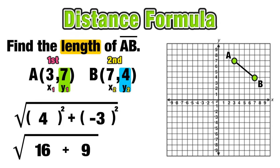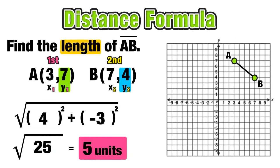Remember, a negative number squared is a positive value. And we know that 16 plus 9 is equal to 25. And finally, we can evaluate the square root, the square root of 25 is equal to 5. So what we just found is that line segment AB is 5 units long.